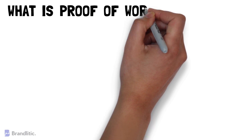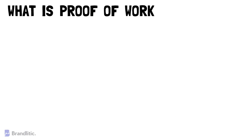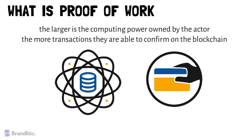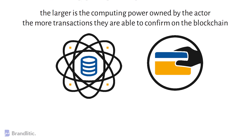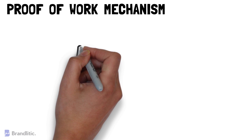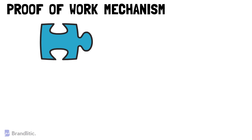First off, what is Proof-of-Work? Proof-of-Work is a conventional method through which new blocks are created after transactions are completed on a blockchain network. It serves the principle that the larger the computing power owned by the actor, the more transactions they are able to confirm on the blockchain. In Proof-of-Work, miners have to solve cryptographic puzzles to validate transactions.